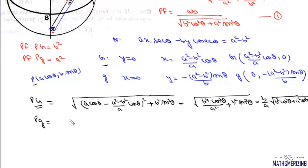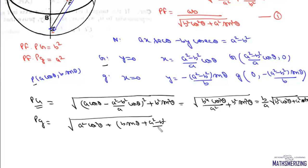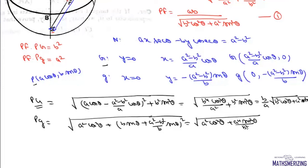Similarly, Pg = √[a² cos²θ + (b sinθ − (−(a² − b²) sinθ / b))²]. After cancellation this simplifies to √[a² cos²θ + a⁴ sin²θ / b²]. Taking a²/b² common, Pg = (a/b) √(b² cos²θ + a² sin²θ).